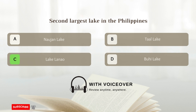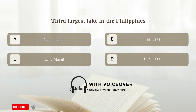Second largest lake in the Philippines — Answer C. Lake Lanao. Third largest lake in the Philippines: A. Nauhan Lake; B. Taal Lake; C. Lake Mainit; D. Buhi Lake.